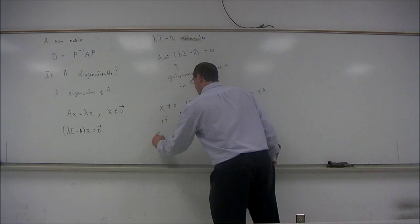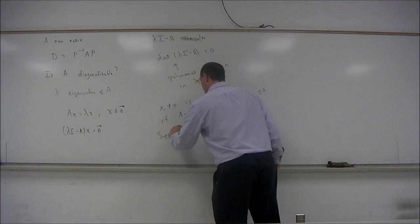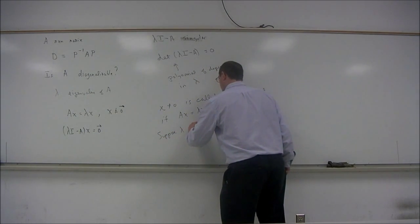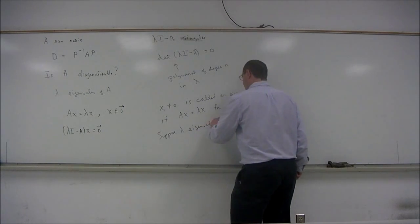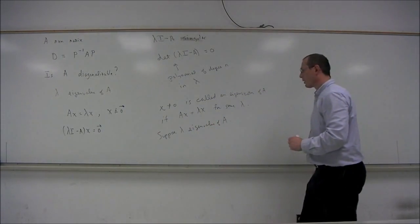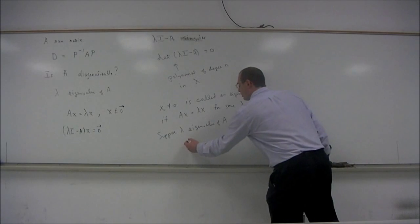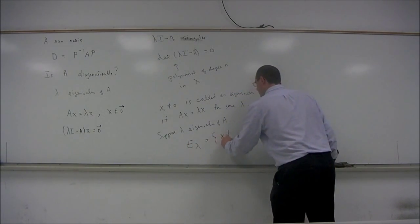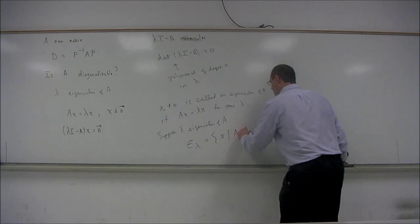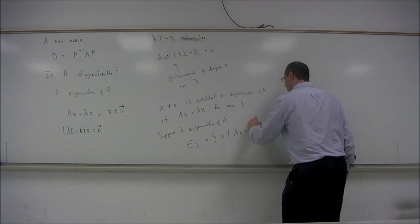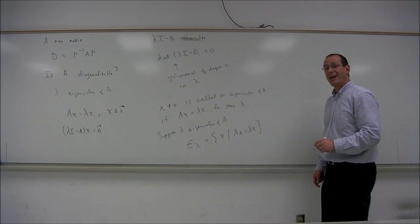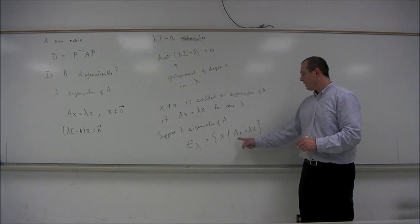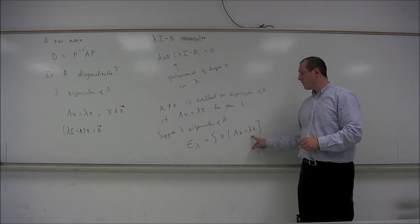So suppose lambda is an eigenvalue of A and consider what I'll call E sub lambda to be the set of all X such that AX is equal to lambda X. This would be the set of all eigenvectors of A associated with the eigenvalue of lambda.